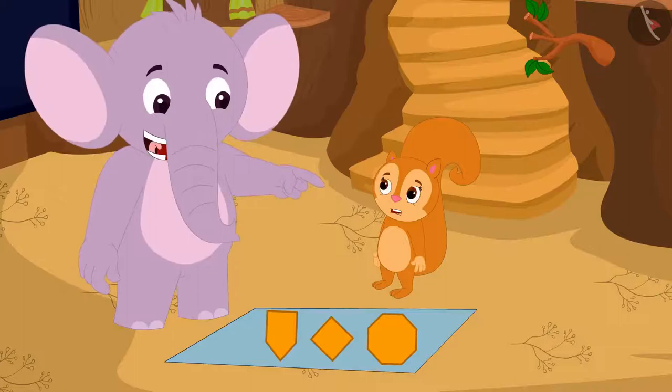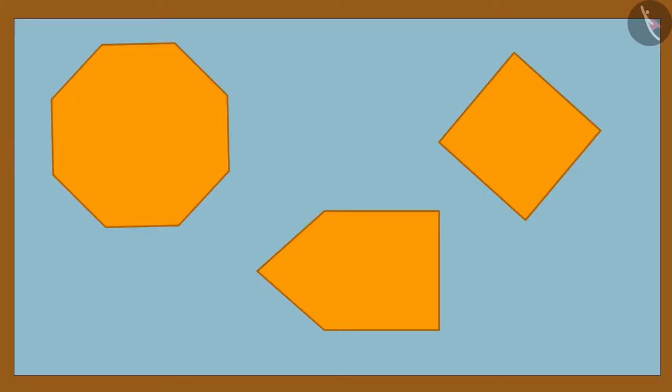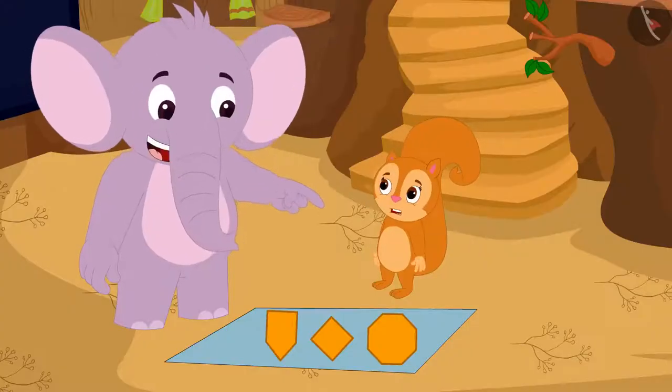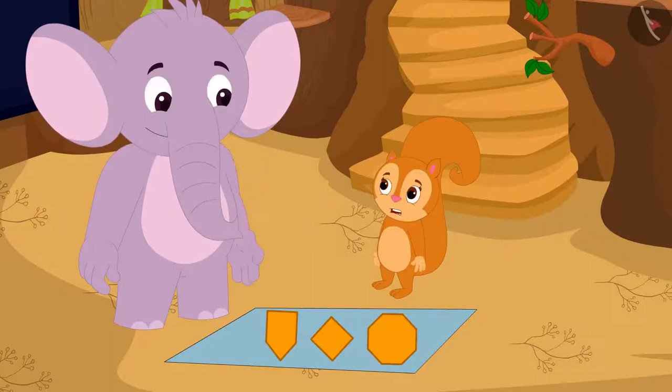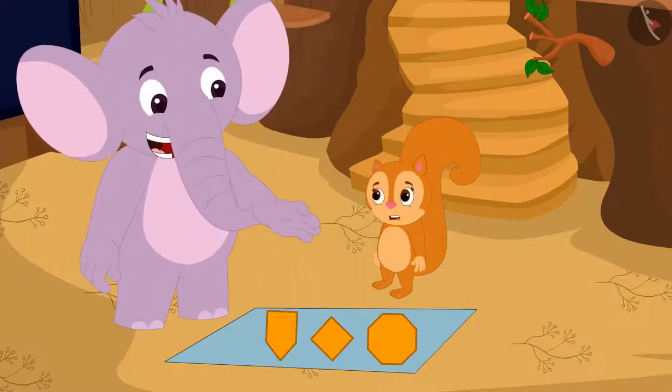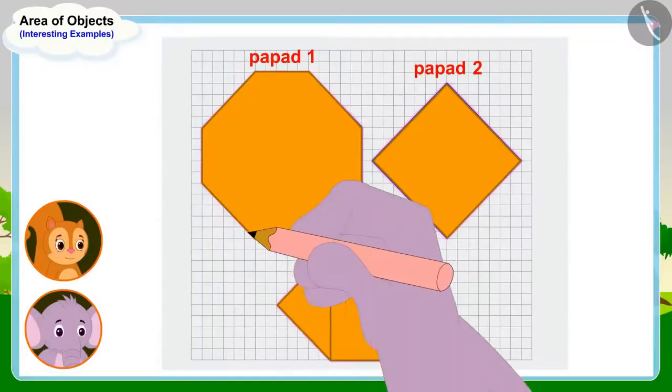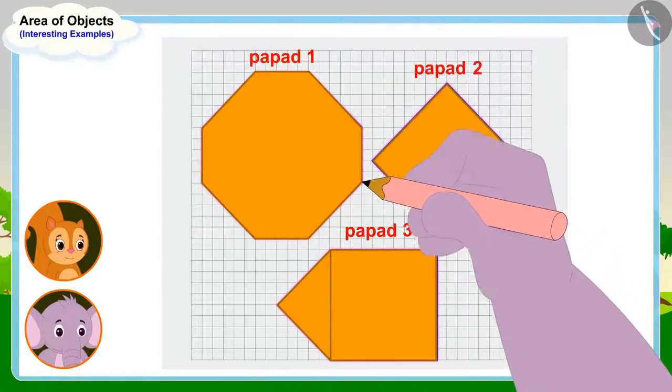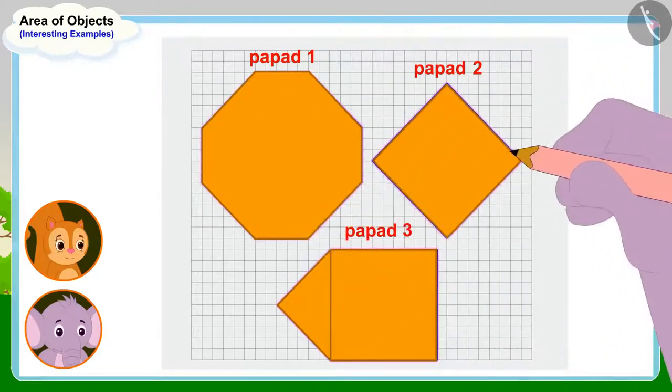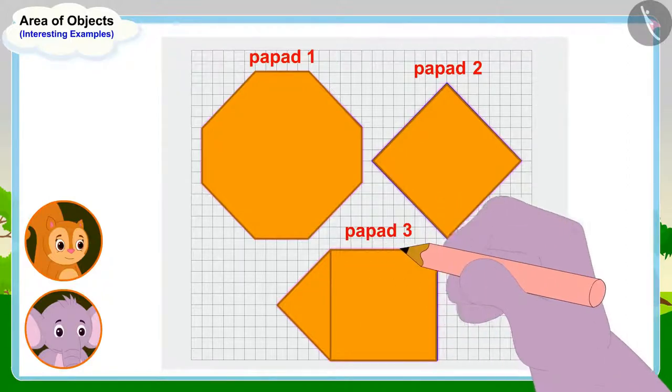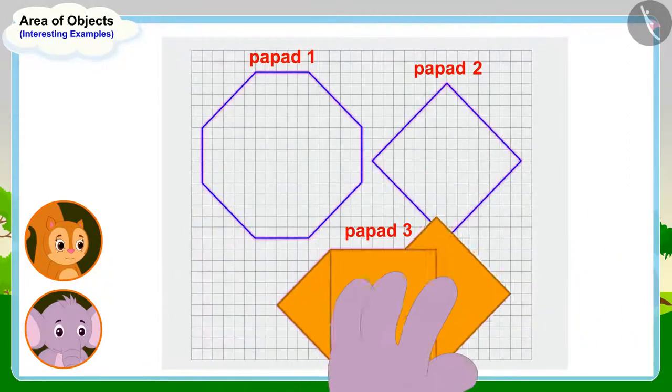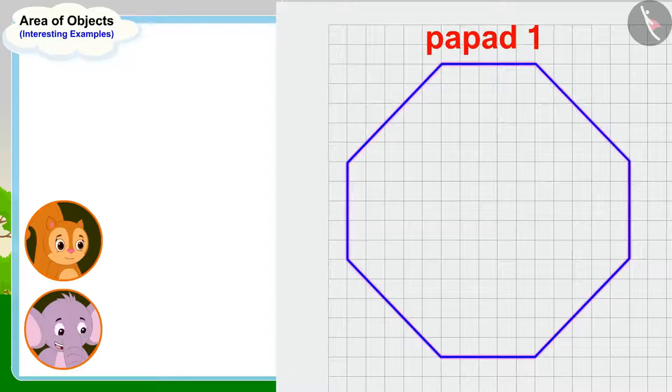To find the answer to your question, all we need to do is to find the area of the papas of these three shapes. The shape of the papar which has the largest area is the largest. Appu told Chanda. Appu then made outlines of papas of all three shapes on the paper with the help of a pencil.